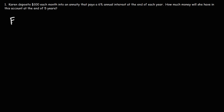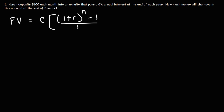We need to calculate the future value of this annuity. That's going to equal C times 1 plus r raised to the n minus 1, divided by r, and then times 1 plus r.